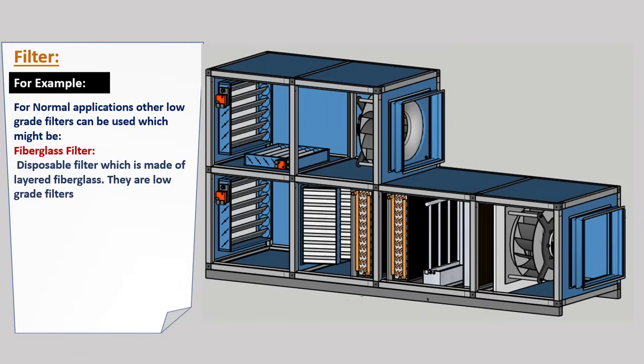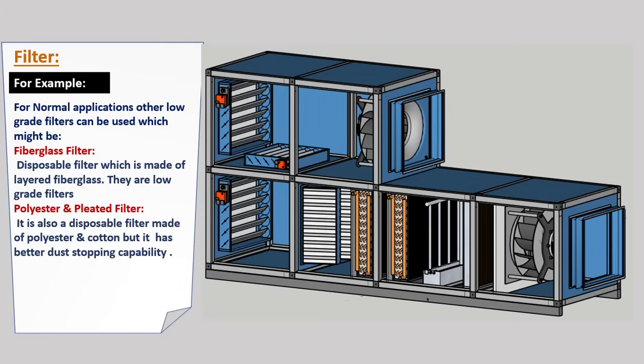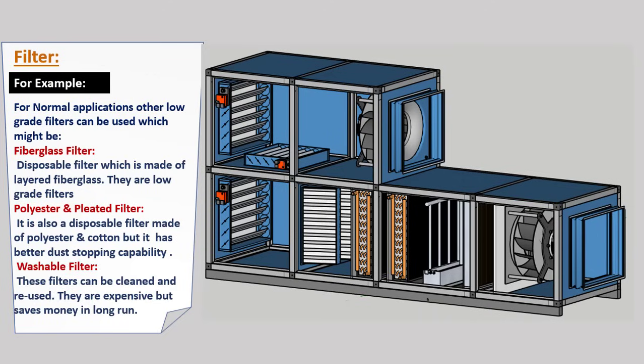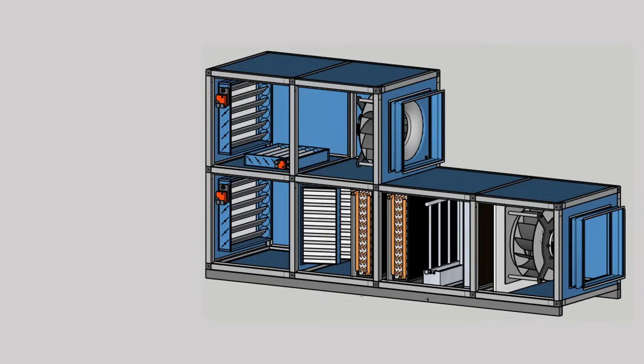For normal applications, lower-grade filters can be used, such as fiberglass filters — a disposable filter made of layered fiberglass. Then we have polyester filters, also disposable, made of polyester and cotton, with better dust-stopping capability than fiberglass. We also have washable filters, which can be cleaned and reused. They are more expensive but save money in the long run.